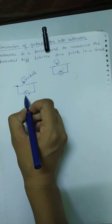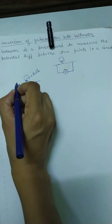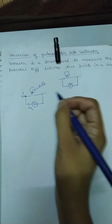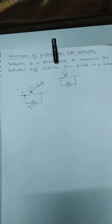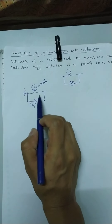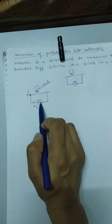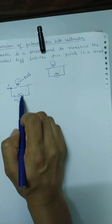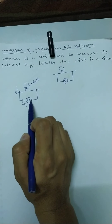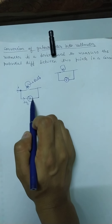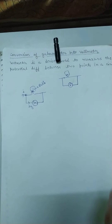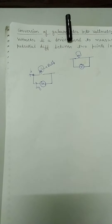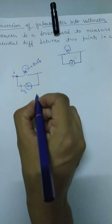Agar humne yahan se I current flow kiya, to galvanometer mein IG current jayega. IG kya tha students? It is the maximum current for the galvanometer which gives full-scale reading. Iske baad kitna bhi current increase karo, jo deflection show kar raha hai, usse aur zyada deflection show nahi karega.